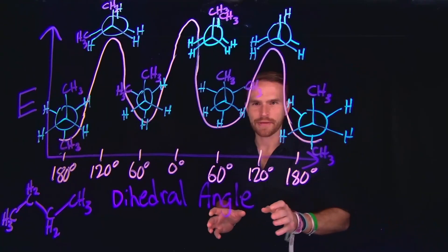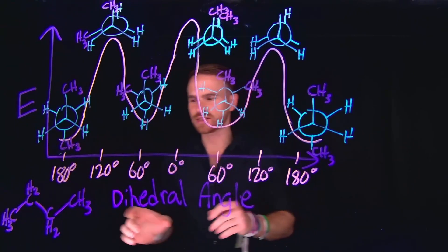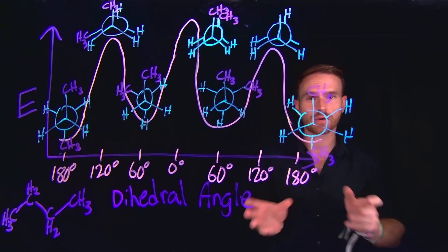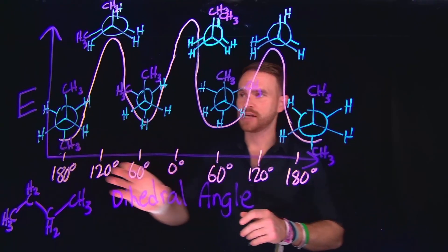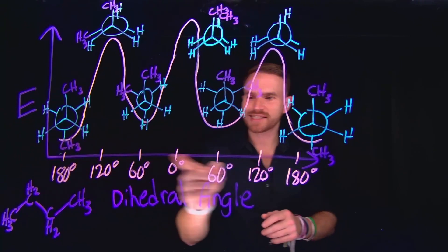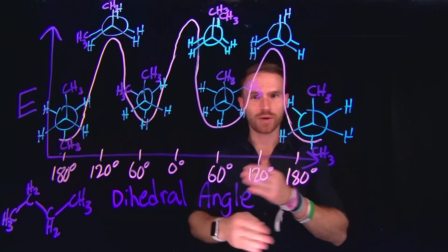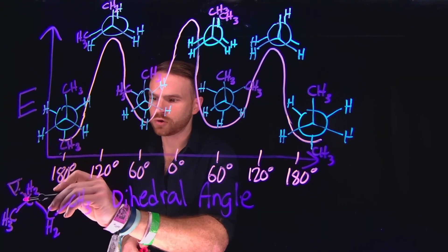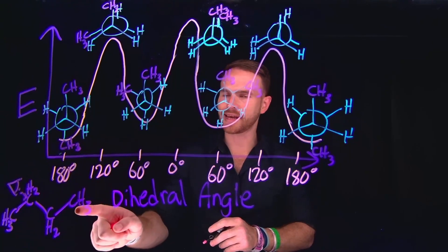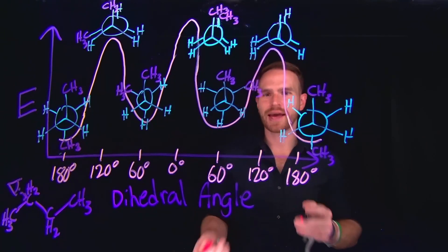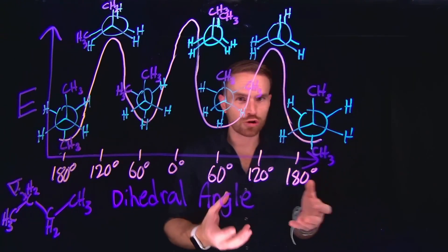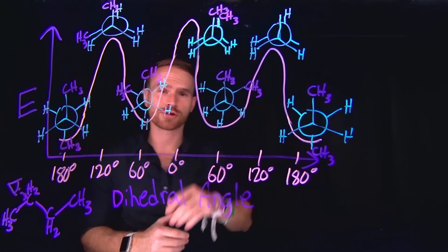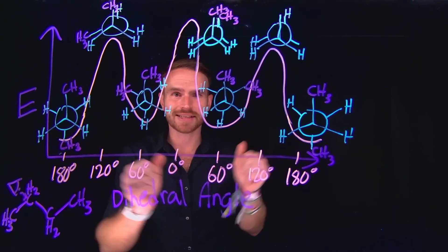Admittedly, for a molecule like ethane, the hydrogen atoms do not interact with each other very much because they're relatively small. However, if we consider butane, then we need to consider all the different orientations and all the different Newman projections that we can draw, and what impact that has on the relative energy of those conformations. On the y-axis, I have potential energy; on the x-axis, I have the dihedral angle — the angle between the two substituents. We're going to be looking down the carbon-carbon bond in the center of the molecule, meaning that on each end we will have a CH3 group.